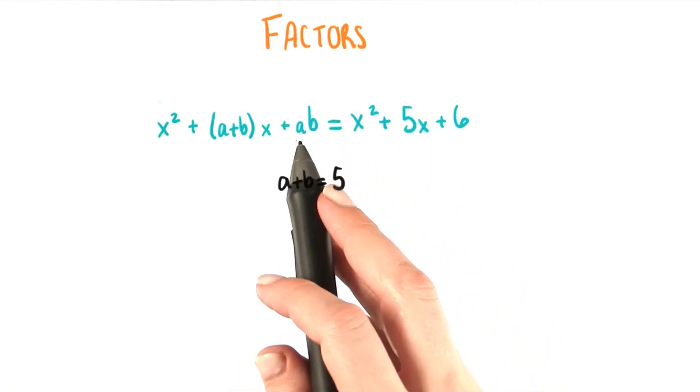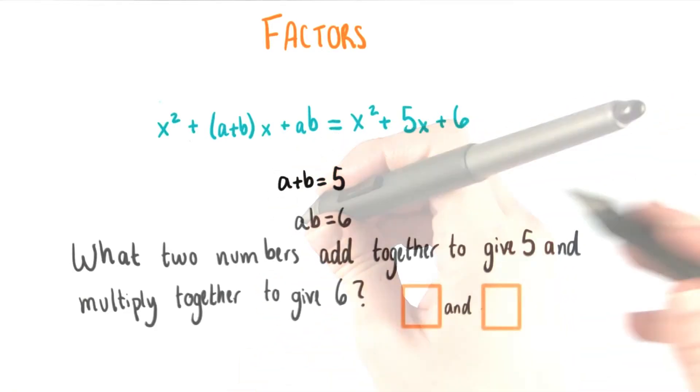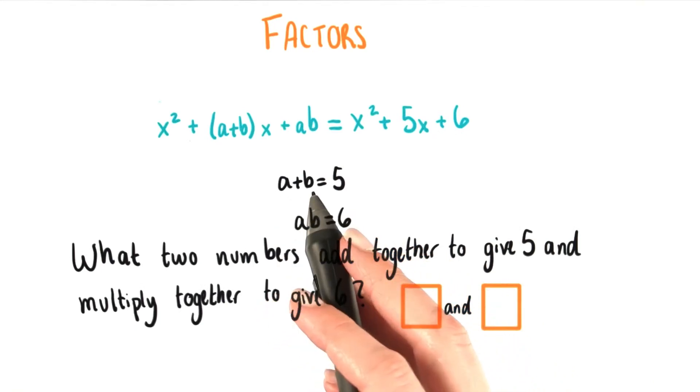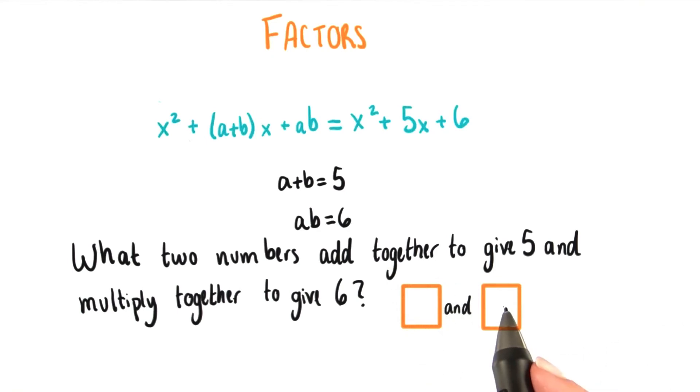We also know that ab must equal 6. So we have two numbers a and b that add to give us 5 and multiply to give us 6. What do you think those two numbers are?